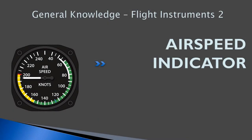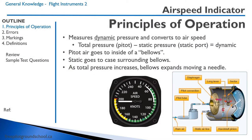Hello everyone. Welcome back to freepilotgroundschool.ca. This is our second lesson on flight instruments. We're going to be discussing the airspeed indicator. The airspeed indicator obviously measures our airspeed — the speed at which the aircraft travels through the air. Because air is a moving fluid, it is different from the ground speed. The airspeed indicator measures dynamic pressure and converts this dynamic pressure to airspeed.